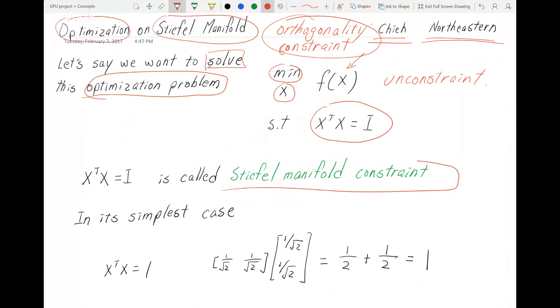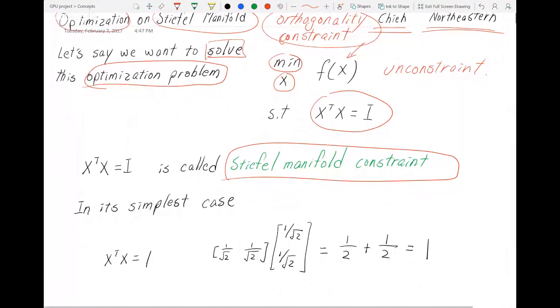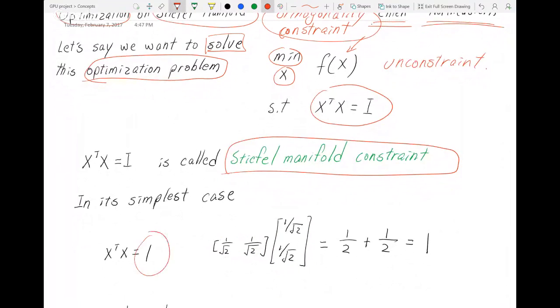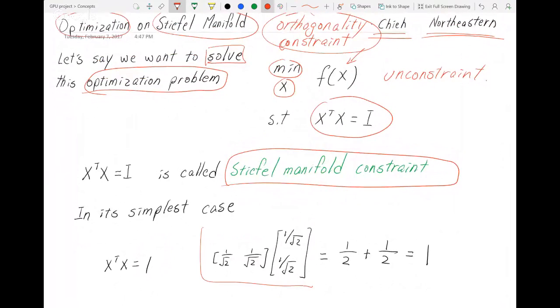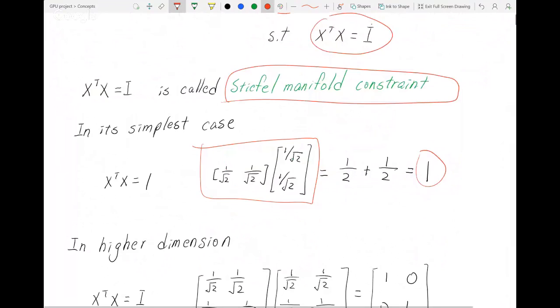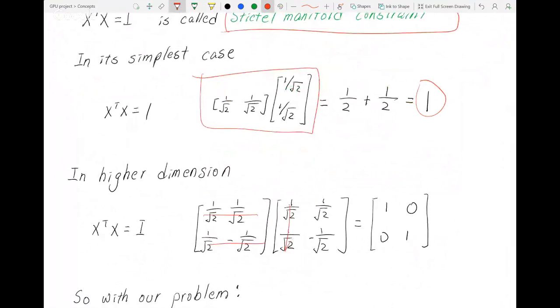This is also called Stiefel manifold. In its simplest case, we just have a vector. When we multiply it by itself transpose, we get the scalar version of the identity matrix, which is 1. As you can see, when you multiply it to itself transpose, you get 1. With multiple columns - now we have two columns - multiply by its own transpose. In this case, we get an identity matrix like this.